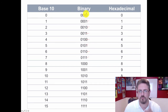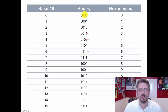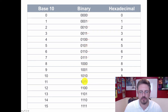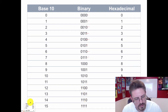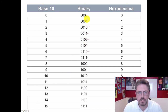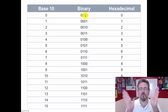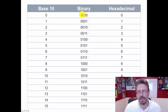Now 1 plus 1 equals 2. For the second column we're going rest, rest, clap, clap, rest, rest, clap, clap — all the way down.